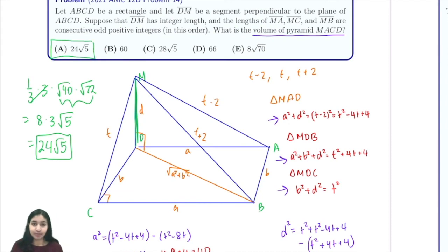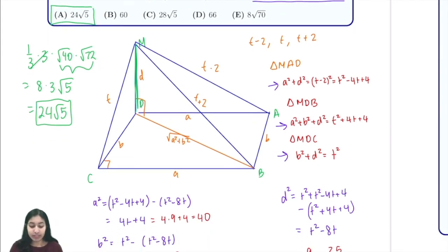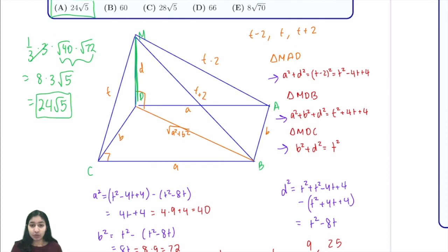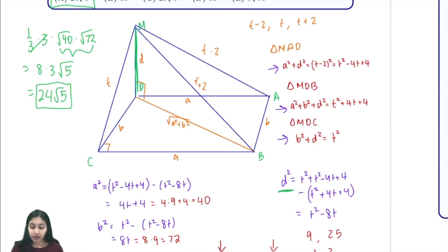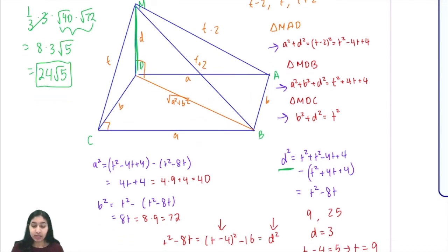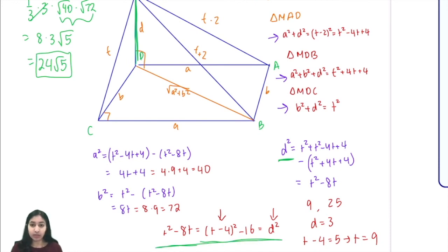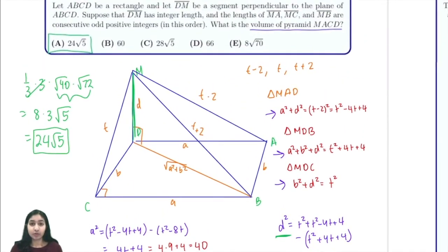So just to quickly summarize what we did in this problem: we assigned values to our side lengths and let them be a, b, d, and t. Then we wrote equations based on our fact that these were perpendiculars, and then we solved for d² by using our equations and then expressed a² and b² all in terms of t. Then we used the fact that d² was an integer, and from here we were able to get that d equals 3 and t equals 9, and then we plugged it all in to our volume formula to find that the volume was 24√5.